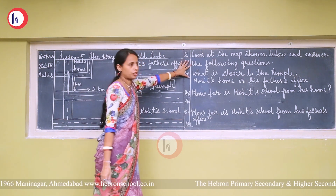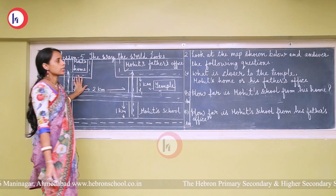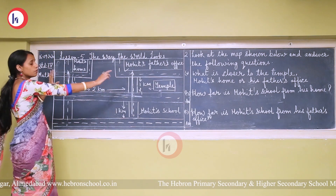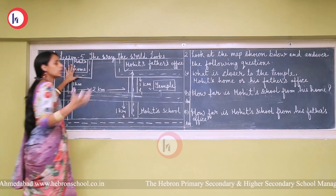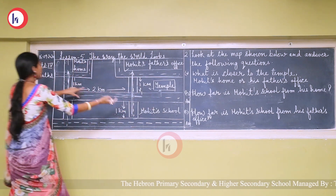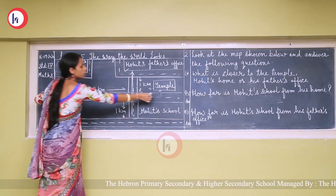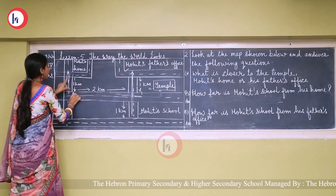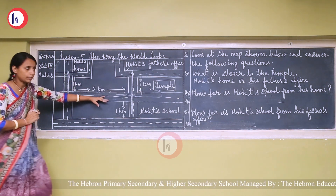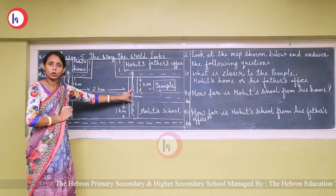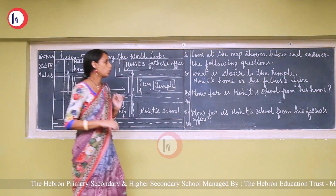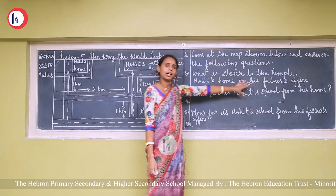Now look at the second map and answer the questions. What is closer to the temple — Mohit's home or his father's office? The temple is here. The distance from the temple to his father's office is only 1 kilometer. The distance from the temple to Mohit's home is 2 kilometers plus 1 kilometer — 3 kilometers. So 1 kilometer versus 3 kilometers — his father's office is closer to the temple.